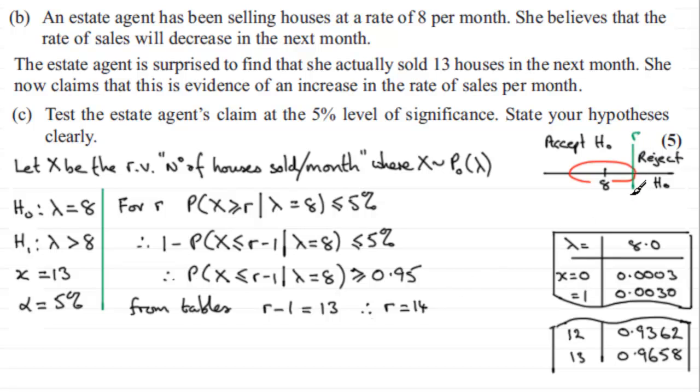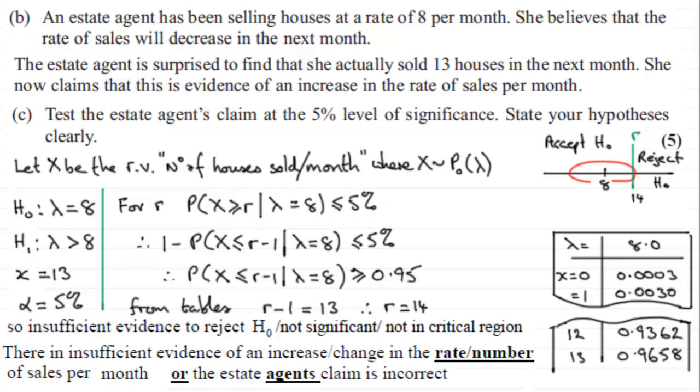Then 0.95 clearly is going to be in the acceptable region. So there's no evidence then to suggest that the mean has increased. So we need to write a conclusion and I've taken an extract from the mark scheme on this. So as long as you write something along these lines, this: insufficient evidence to reject the null hypothesis, or you could say it's not significant, or not in the critical region.